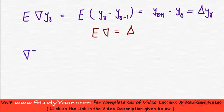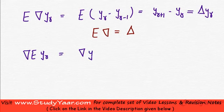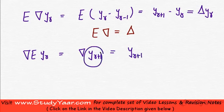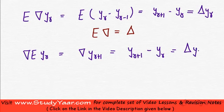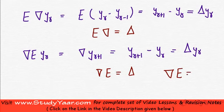Similarly, del into E·YR equals del of YR plus 1, which by the backward difference gives the current value YR plus 1 minus the previous value YR. So this is also equal to delta·YR. Therefore del into E is also equal to delta — in other words, del into E is equal to E into del.